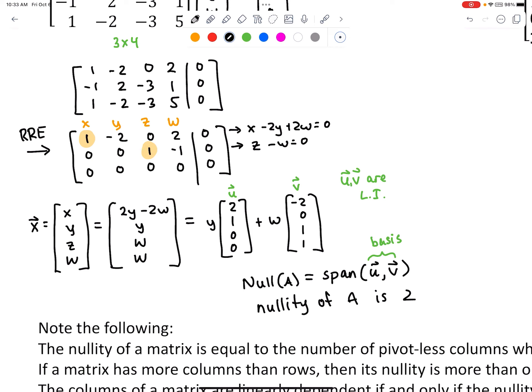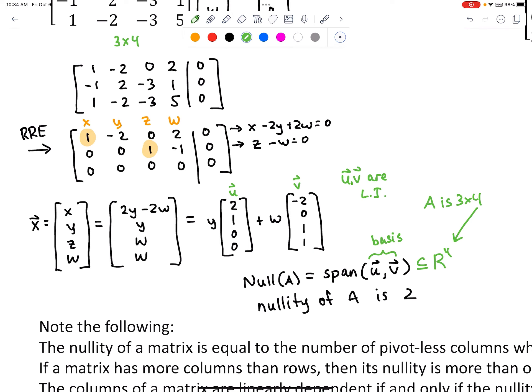This subspace is specifically a subspace of R^4, because the vectors u and v are four-dimensional — they each have four components. A was a 3 by 4 matrix, and the number of columns dictates how many components must be in a vector that's in the null space.